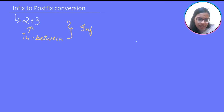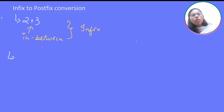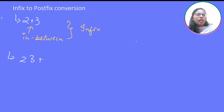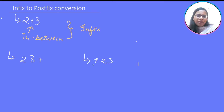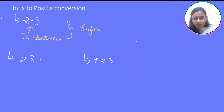Coming to postfix and prefix expression — as the name suggests, in the postfix expression the operator comes after the operands, and in the prefix expression, such as plus 2 3, the operator comes before the operands.